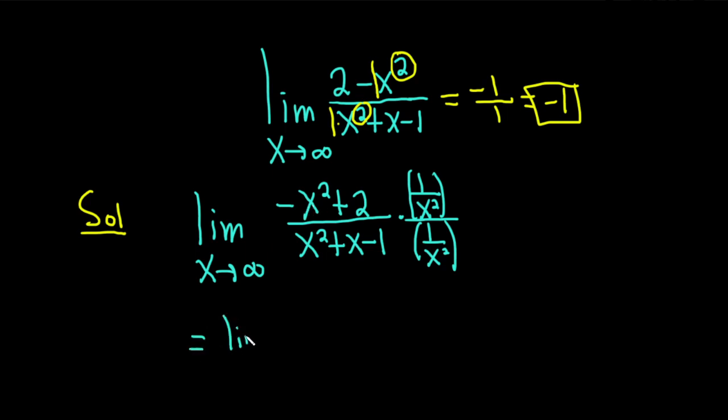So this is equal to the limit as x approaches infinity. So 1 over x squared times negative x squared is going to give us negative x squared over x squared. And then plus 2 times 1 over x squared will give us 2 over x squared.